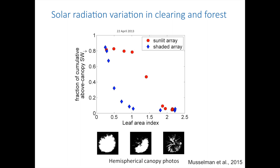What we find is that if we look at the solar radiation between the clearing and the forest, and I use something called leaf area index, which I'm not even going to define. If you work with it, you know it. Basically, if it's small, it's open, and if it's high, it's dense canopy.